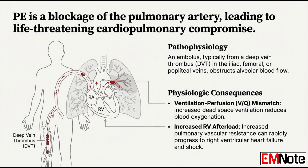It's a two-part problem. First, gas exchange breaks down. You get this ventilation-perfusion mismatch, meaning air is coming in but the blood can't get to it. So you're increasing dead space and dropping blood oxygen levels. And the second part of that problem is the heart — and this is what can be so lethal. The blockage skyrockets the resistance in the pulmonary vessels, so the right ventricle is trying to pump against a brick wall. That massive afterload can cause the right ventricle to fail, which leads straight to hemodynamic instability and shock.